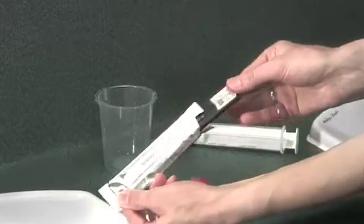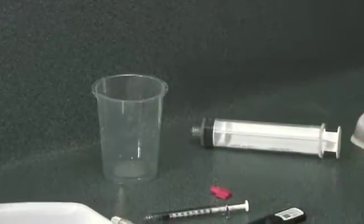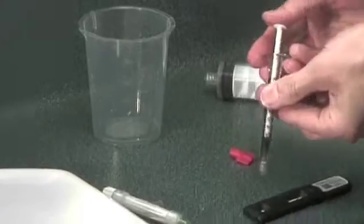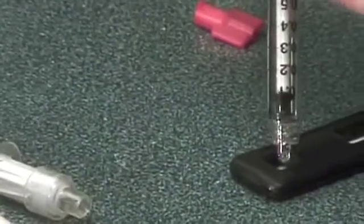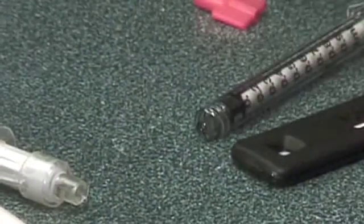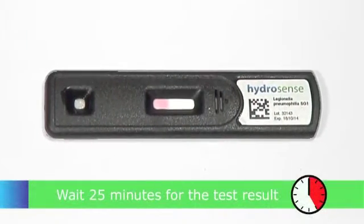Remove the HydroSense test strip from the pack. Drop the contents of the small syringe onto the sample point on the HydroSense strip. Leave the strip for 25 minutes on a flat surface.